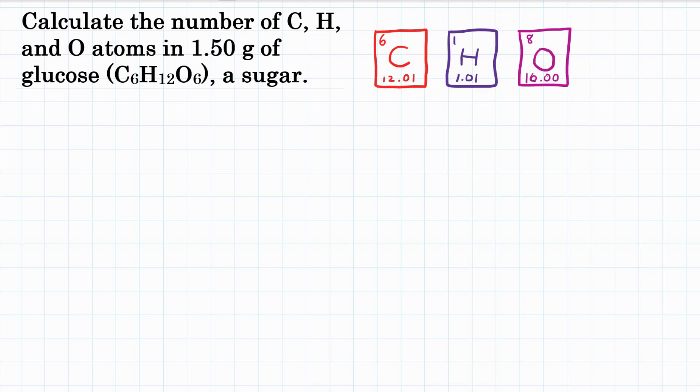Alright everyone, calculate the number of C, H, and O atoms in 1.50 grams of glucose, which is C6H12O6, a common sugar.